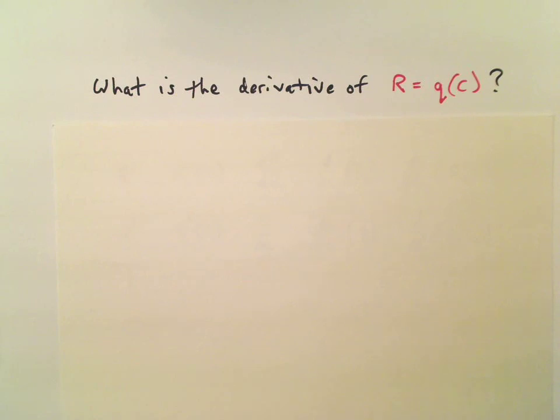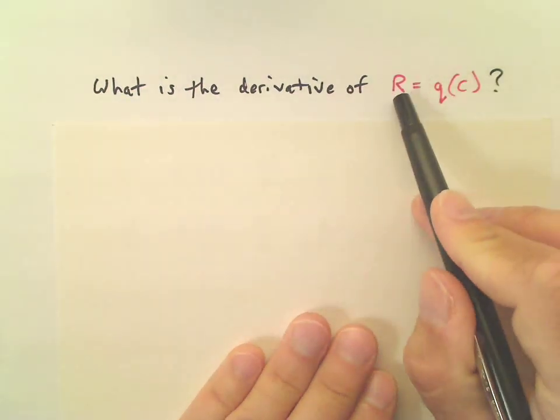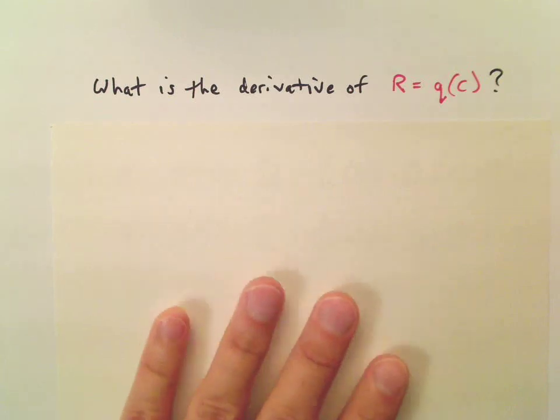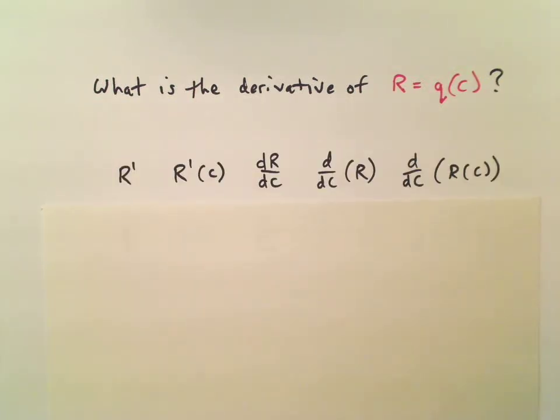After all, there's nothing sacred about the letters x, y, and f. We can use any letters we want when we are doing these derivatives. You can use uppercase or lowercase letters, Greek letters, letters from other alphabets, anything you want. So, r is like y, and c is like x. So there's our first set of derivatives.